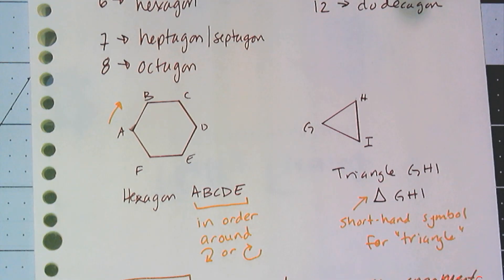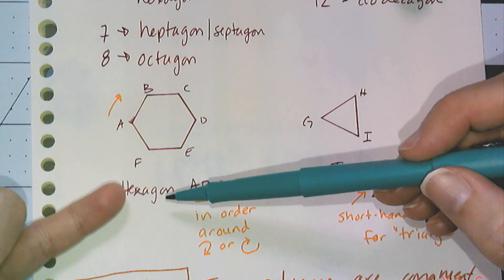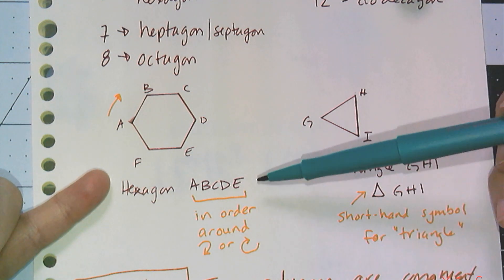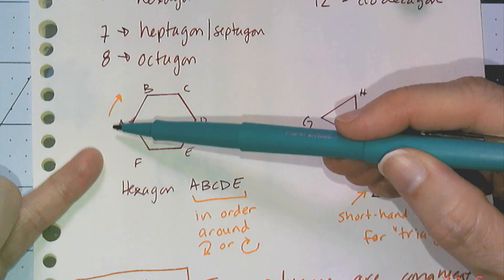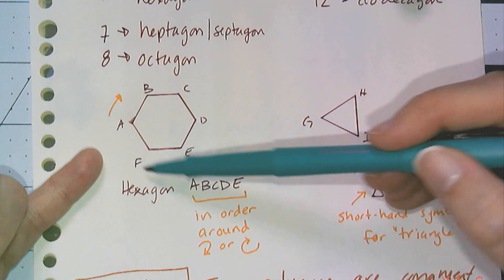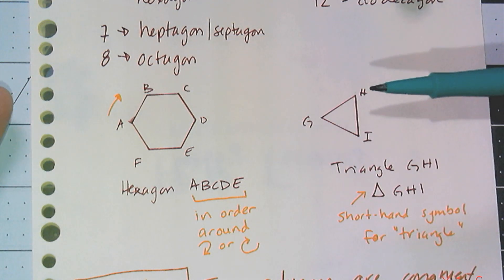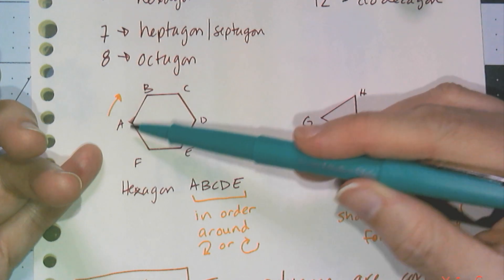When we name these things, I can use generic polygon, but if I know the name by the number of sides, I'm going to use it. So I'm going to name this thing hexagon ABCDE. It has to go in order around, so you just pick any vertex and go around either clockwise or counterclockwise. It doesn't matter which vertex you pick. I could name this thing CDEFAB if I wanted to.